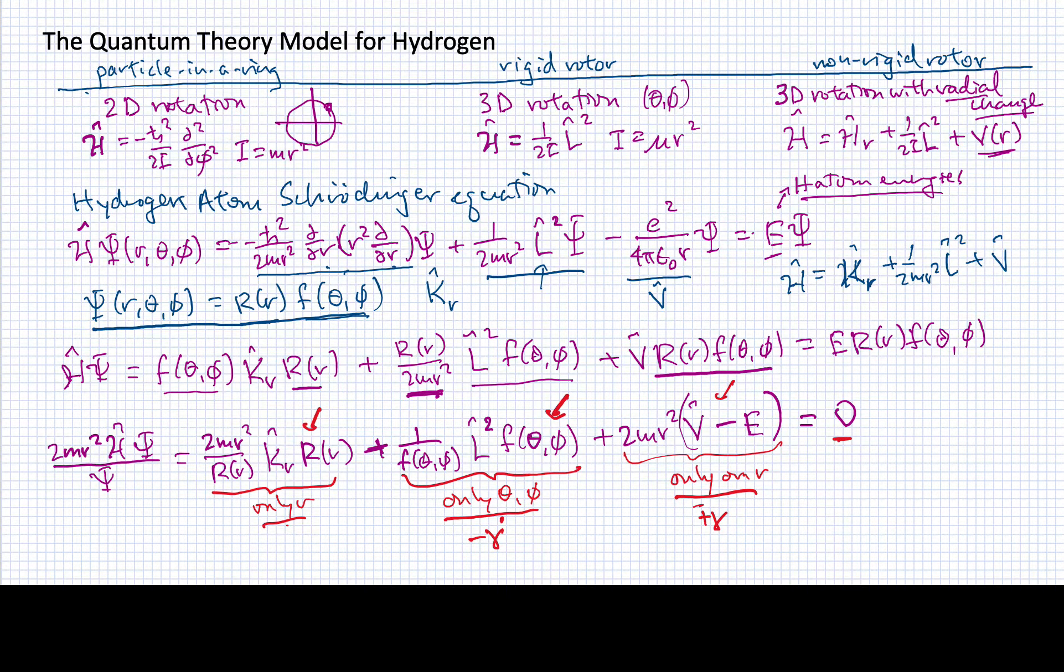For the angle-dependent part, I'll have an equation that looks like this: this divided by f equals negative gamma. When I multiply both sides by f and move this over to the other side, I'll have f of theta and phi over here.